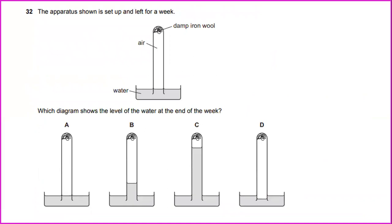The apparatus shown is set up and left for a week. There is a dam, iron wool, air, and water. What happened when there is life exists, it will produce oxygen and during respiration it uses carbon dioxide and releases oxygen. Which diagram shows the level of the water at the end of the week? The answer, what happened when during respiration it takes up the oxygen. When it takes up the carbon dioxide and releases the oxygen. So what will happen? The water will increase a little bit as shown in the diagram.